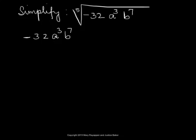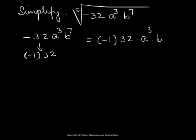Since negative 32 is same as negative 1 times 32, this is written as negative 1 times 32 times a cubed times b to the seventh.